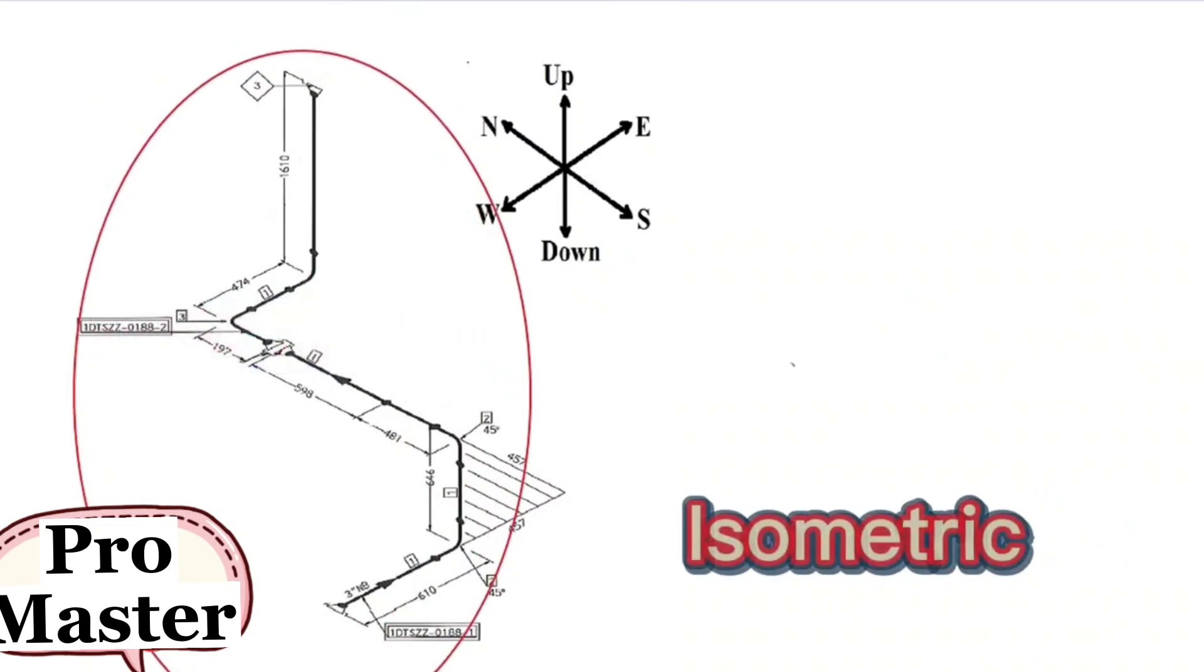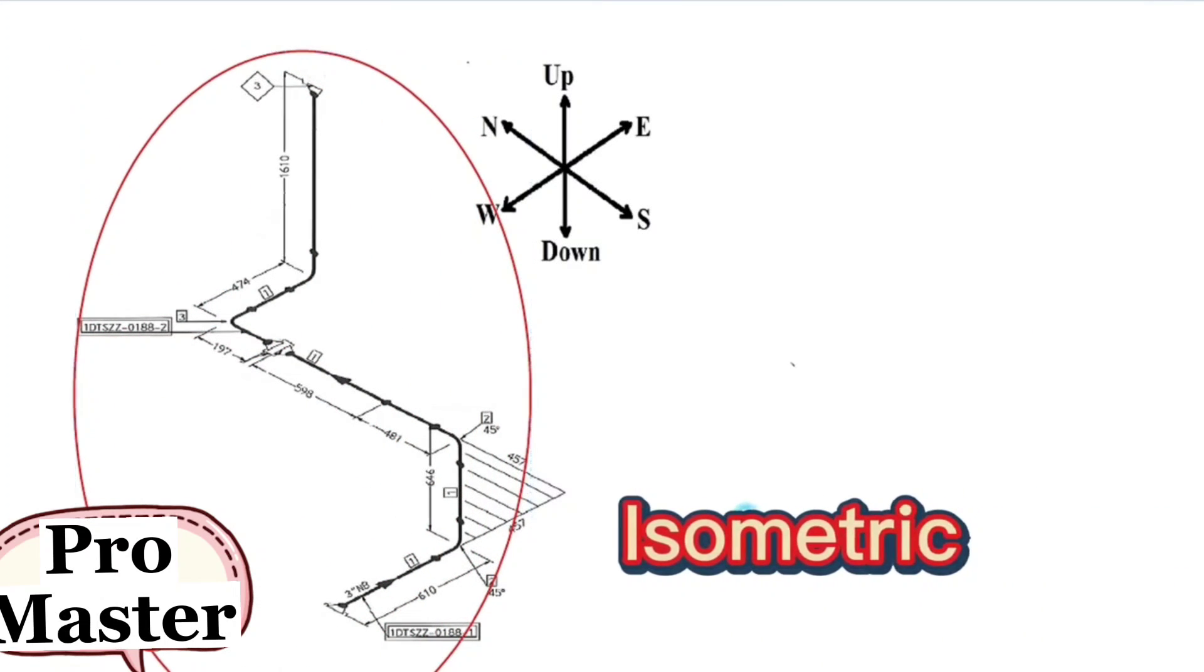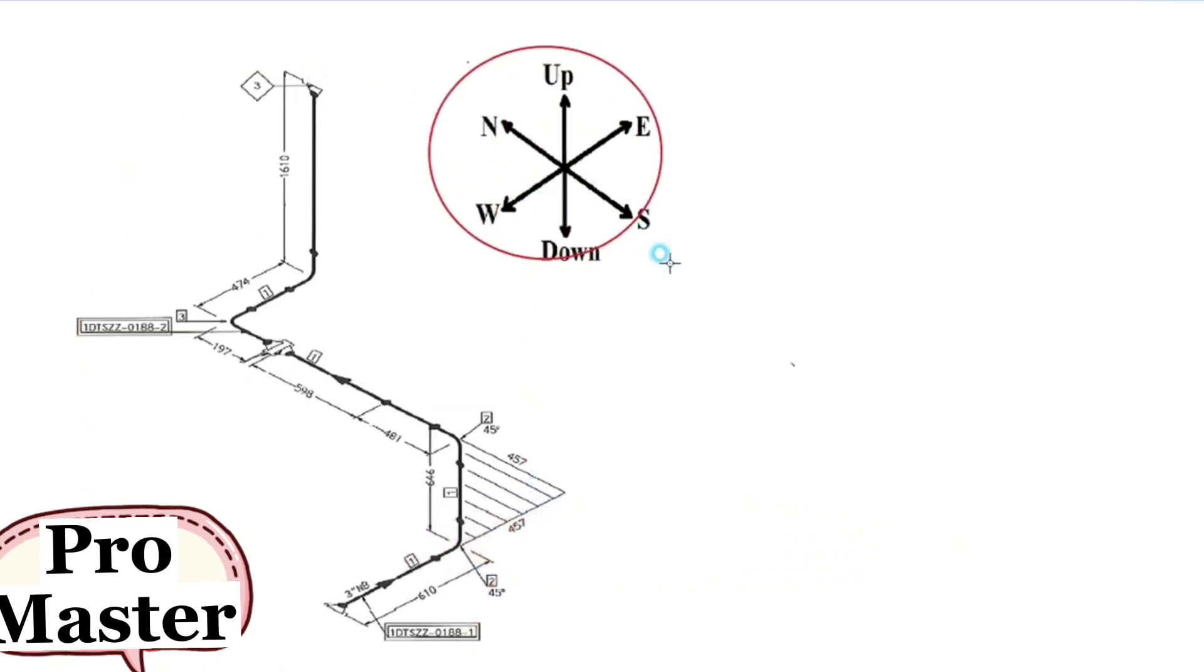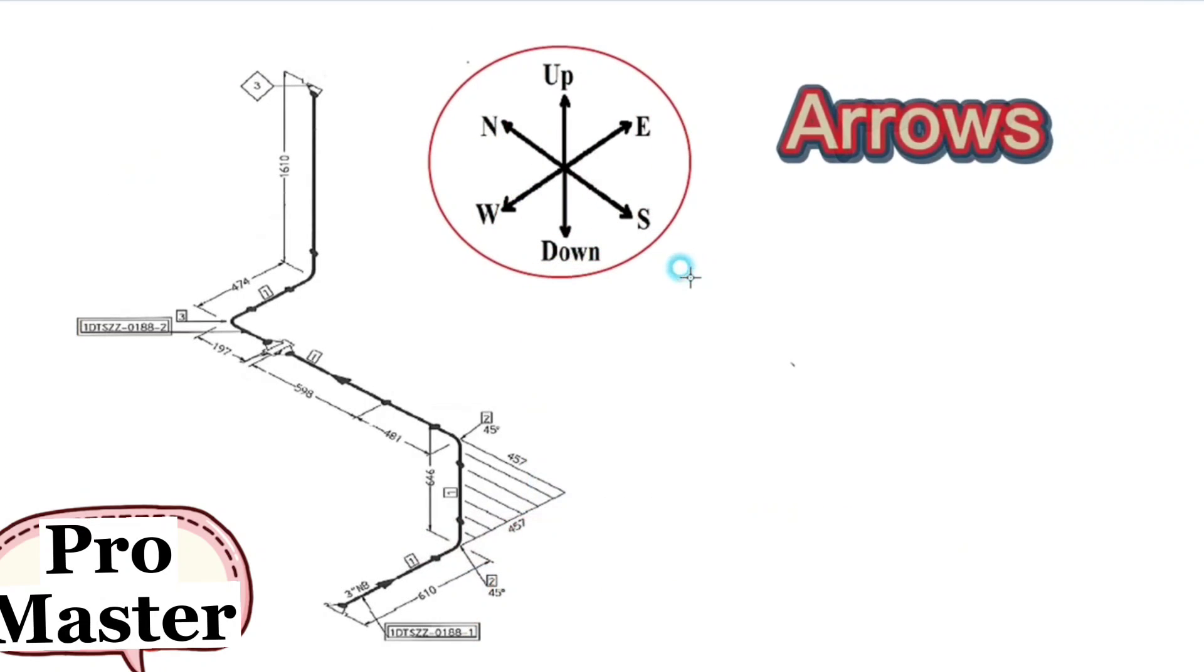This is pipe isometric drawing. Every pipe drawing has such a sketch, this indicates the directions. There are six directions here.